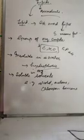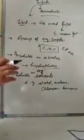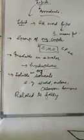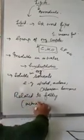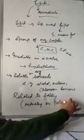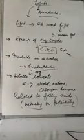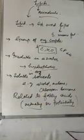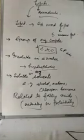In addition to this, there is another important point in the definition: lipids are related to fatty acids — actually or potentially. 'Actually' means in reality they are fatty acids, and 'potentially' means they can become fatty acids. So the complete definition of lipids is: a group of organic compounds which are insoluble in water, soluble in organic solvents, and related to fatty acids actually or potentially.